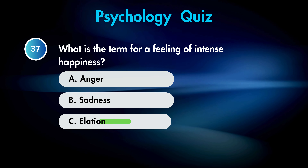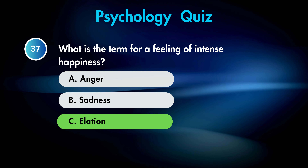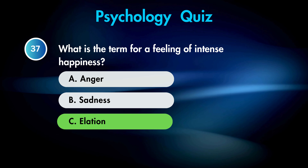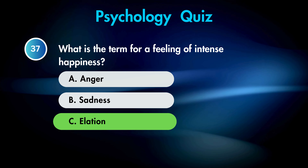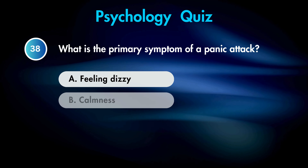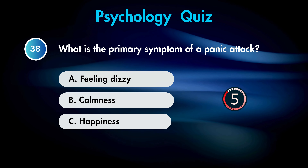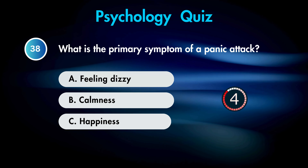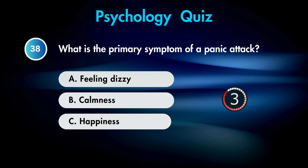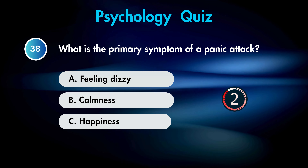Which disorder involves excessive eating followed by purging? Answer B. Bulimia.